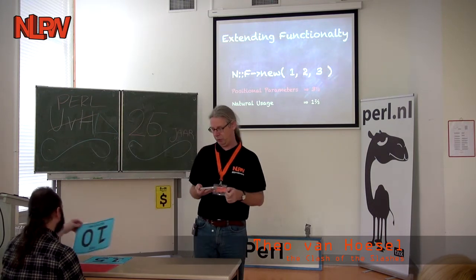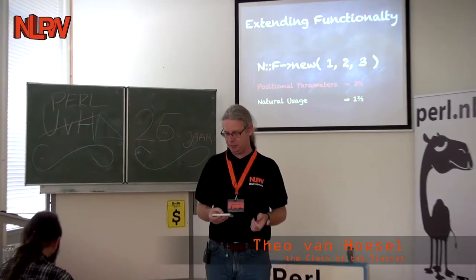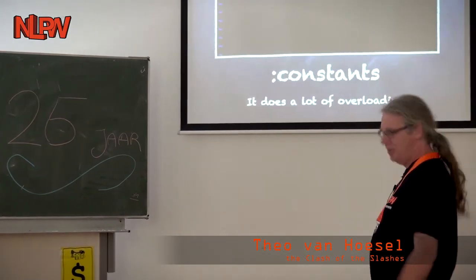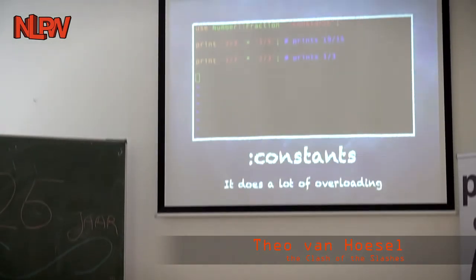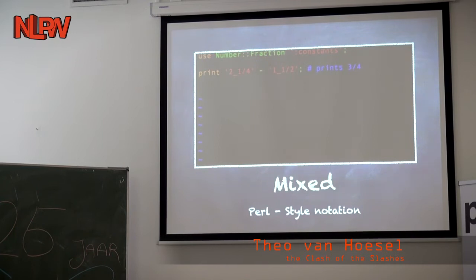The whole thing of Dave Cross's module is that he actually did a very lot of overloading. One of the nice things with overloading is that he made it possible to interpret constants. When you do constants you can now do things like print two thirds plus three fifths and it will print nine fifteenths. Or you can say print a half times two thirds and you will end up with one third. But I was not happy because I want my mixed fractions. Now I can simply say print two and a quarter minus one and a half and it will say three fourths. I think this is a nice Perl syntax way where we use the dot to concatenate things together in strings.